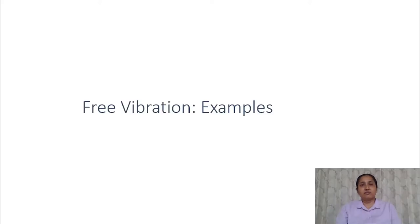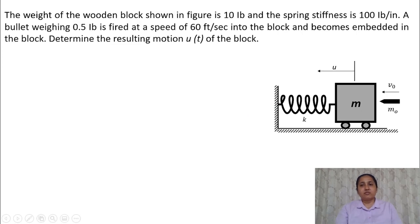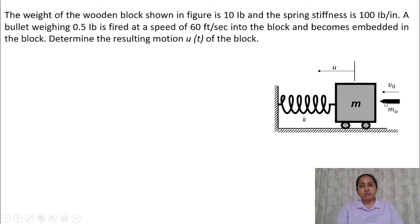Now let's look at free vibration examples. In the first example, a wooden block connected to a spring has a bullet fired into it. The bullet has some mass and velocity and gets embedded in the block. We need to find the resulting motion of the block. When the bullet hits the block, both masses move together with a new velocity — firing the bullet into the block gives an initial velocity to the wooden block.